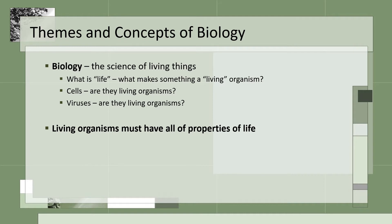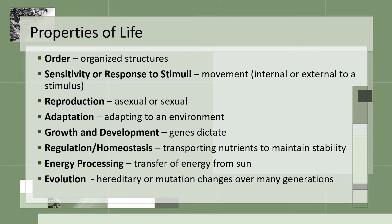Biology is the science of living organisms, but what is categorized as a living thing? Are cells living? Are viruses living? There are several characteristics an organism must exhibit to be considered a living organism. For an organism to be considered living, it must exhibit at some point in its life all of these characteristics.